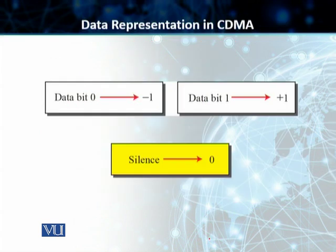This is a special coding scheme for how we represent data in CDMA. Data bit 0 is represented by minus one, data bit 1 is represented by plus one, and silence on the channel is represented by zero.